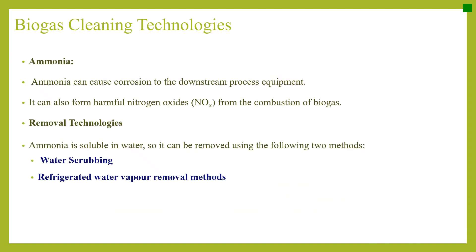Ammonia. Ammonia can cause corrosion to downstream process equipment and can also form harmful nitrogen oxides during combustion of biogas. Since ammonia is soluble in water, it can be removed using water scrubbing and refrigerated water vapour removal methods, which have been discussed earlier.